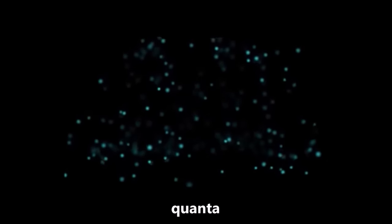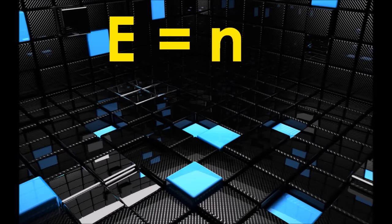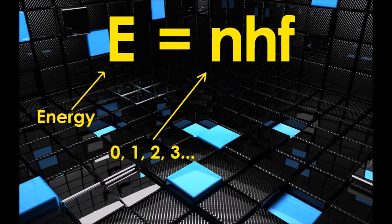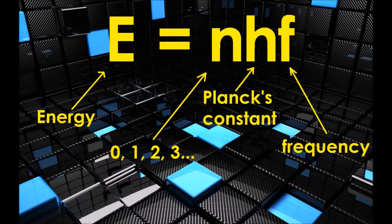Formally, the assumption that he made can be expressed with this equation: E equals NHF. Energy equals some integer, times some constant that would later come to be named after Planck, times the frequency of one of the standing electromagnetic waves inside of the blackbody cavity.